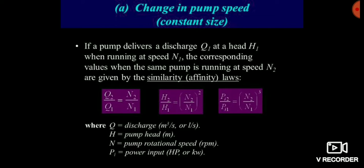First, we will see the relationship between the discharge and the running speed of the pump, that is RPM. The discharge is directly proportional to the running speed of the pump. If we increase the value of discharge, then the running speed of the pump increases linearly. Here the relationship is linear — if we double the pump speed, then the discharge will also be double.